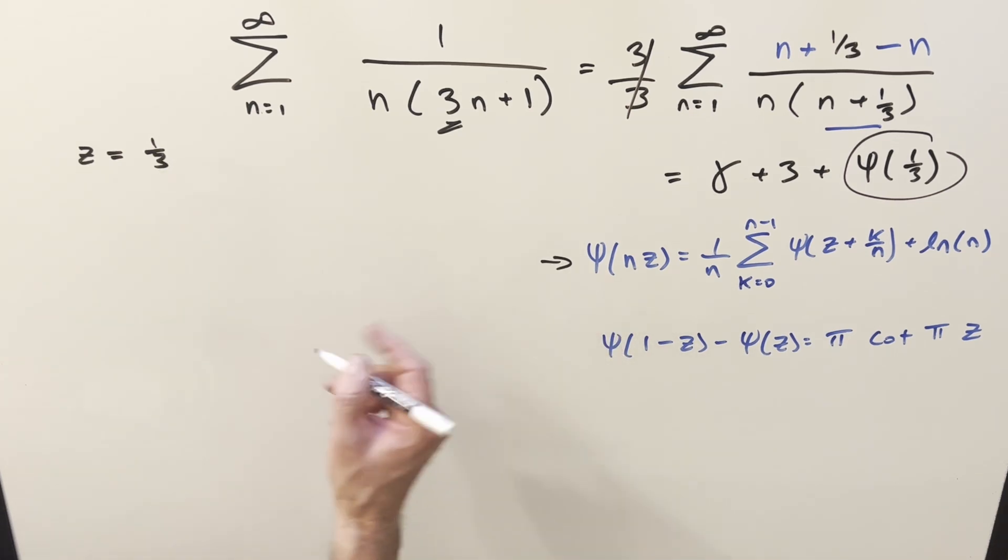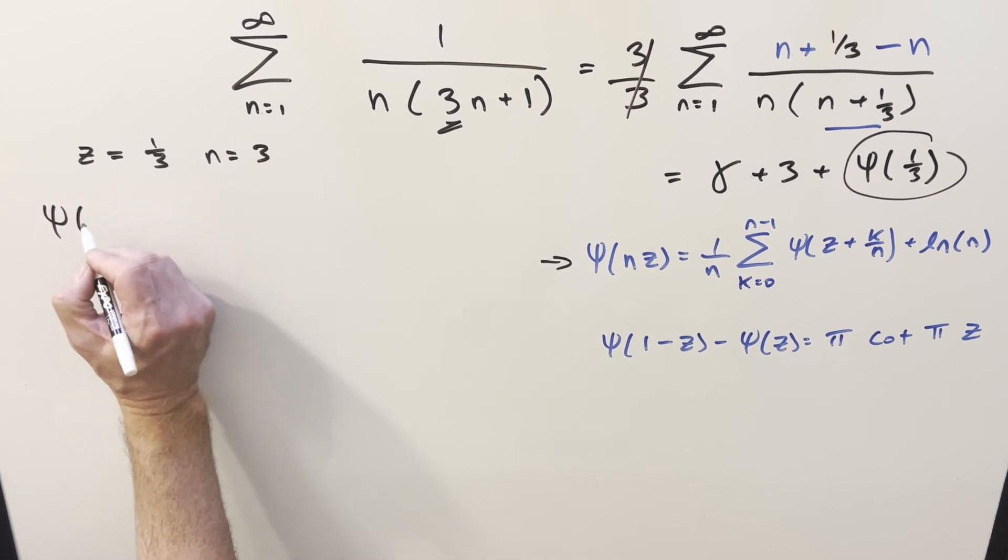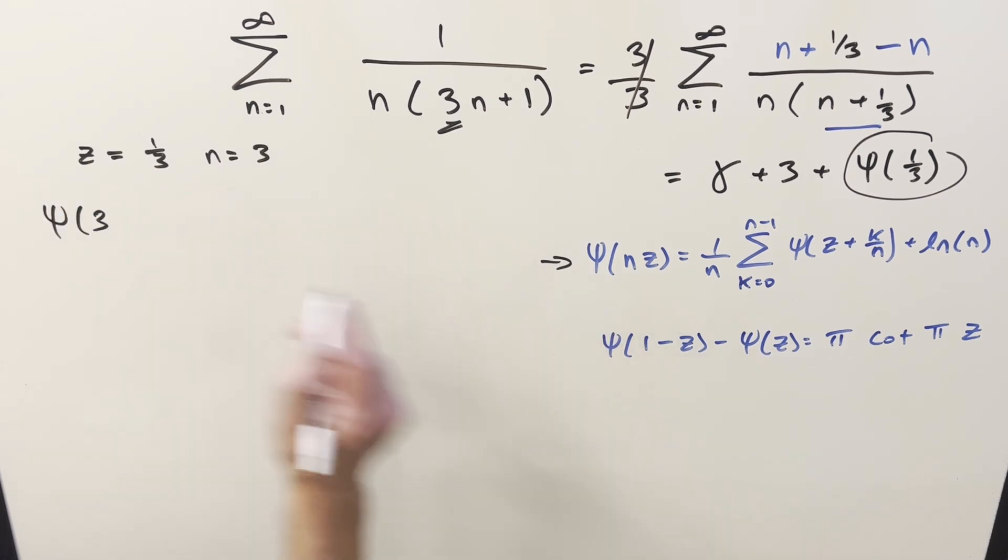So let's start with this formula here, and I'm going to call the value we want is, for digamma of 1 third, we want 1 third. So I'm going to call this z 1 thirds. And the way to get this to be a nice value is if I say n is 3.